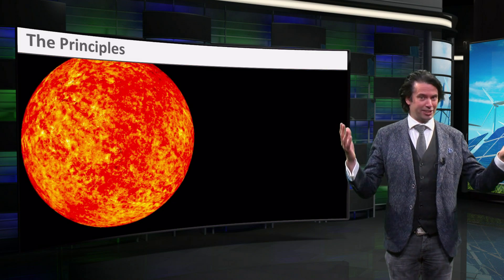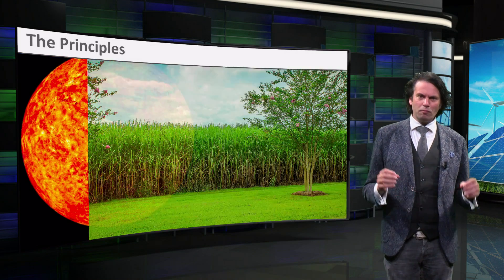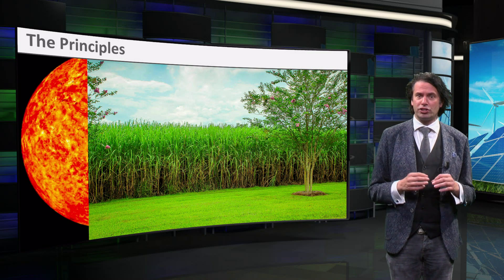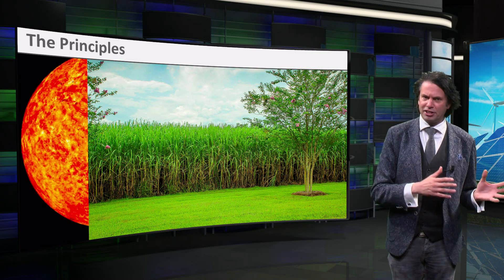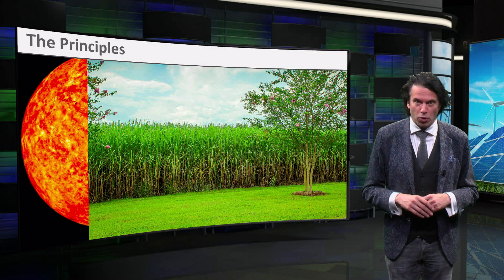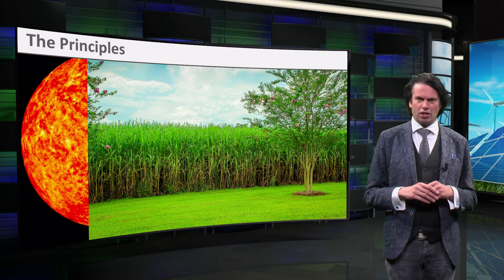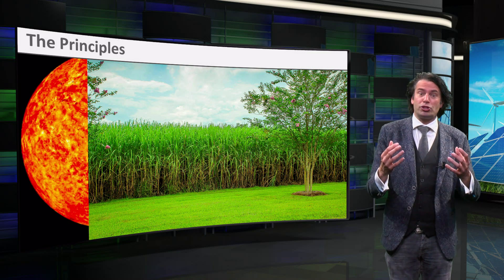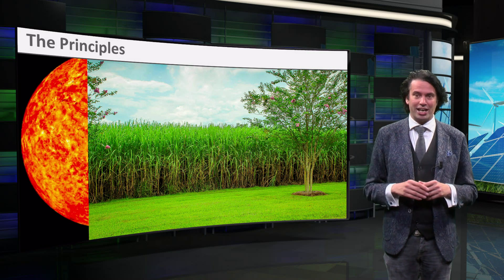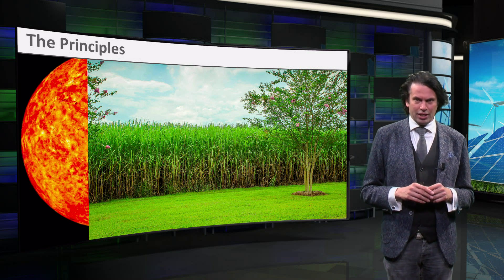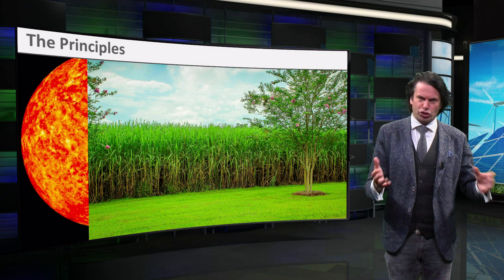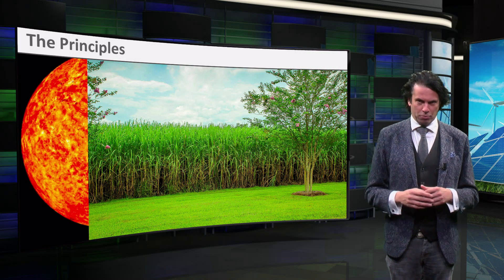We start with the sun. All plants and trees on earth use photosynthesis to convert solar energy into chemical energy in the form of carbohydrates. In this process, carbon dioxide is converted into oxygen as well. This makes our planet habitable for us humans and all other animals.